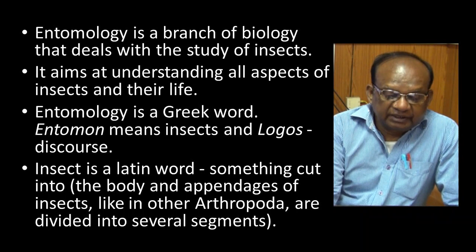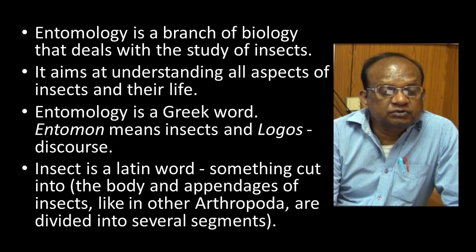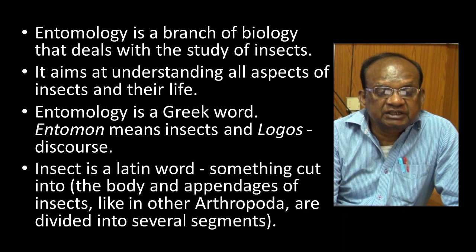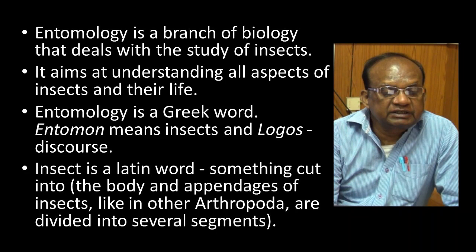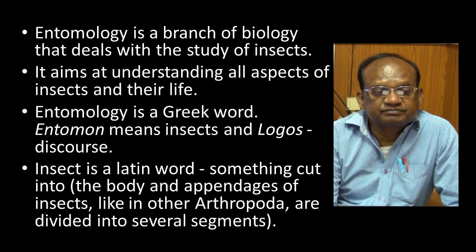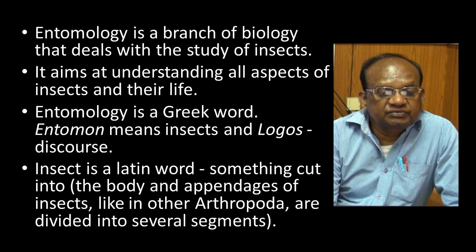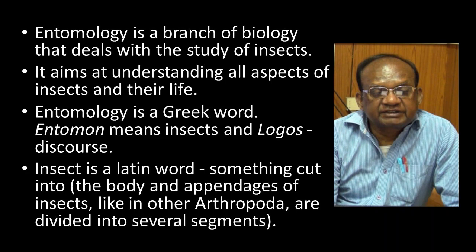What is Entomology? Before going to the term Entomology, we should learn what is Biology. Biology means the Science of Biological Organisms, the Science of Life. Biology can be broadly divided into two parts: Zoology and Botany. Zoology is the Science of Animals, whereas Botany is the Science of Plants.